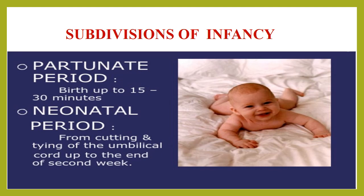Infancy is generally subdivided into two periods: the period of the parchnate and the period of the neonate. The period of the parchnate is from birth to 15 to 30 minutes after birth. This period begins when the fetal body has emerged from the mother's womb and lasts until the umbilical cord has been cut and tied — until then the infant continues to be a parasite. The period of the neonate is from the cutting and tying of the umbilical cord to approximately the end of the second week of postnatal life, during which the infant must make adjustments to the new environment outside the mother's body.